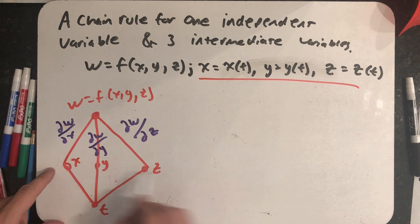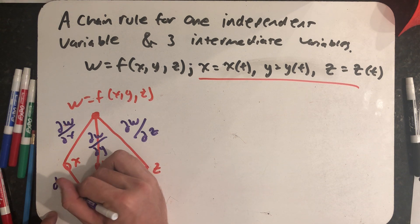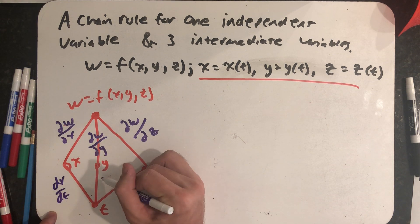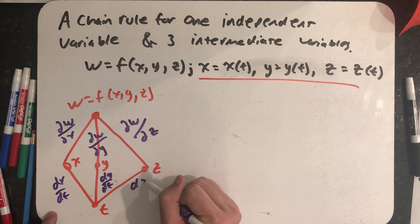And then finally this row of variables, when I look down I see that lone independent variable. These are derivatives: dx/dt, dy/dt, and dz/dt.